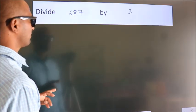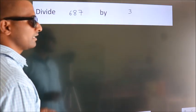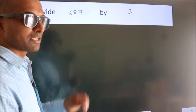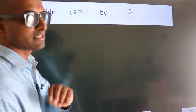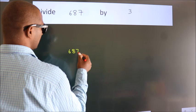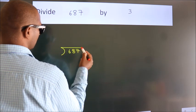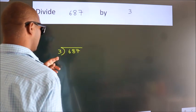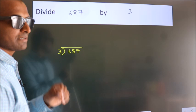Divide 687 by 3. To do this division, we should frame it in this way: 687 here, 3 here. This is your step 1.